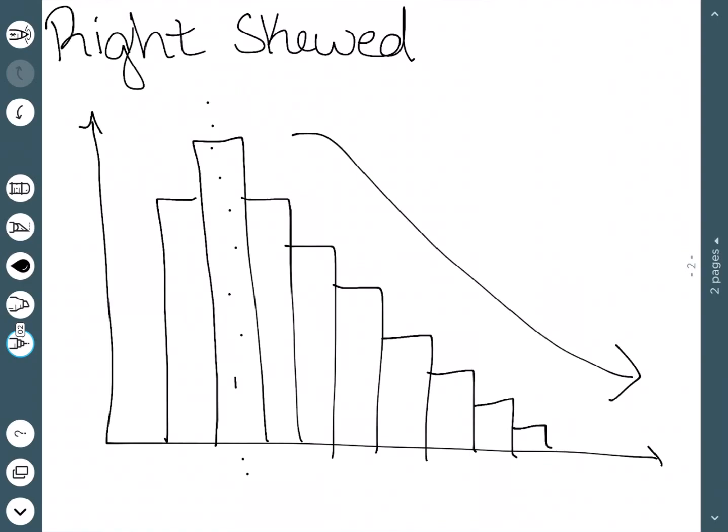So the right tells us where the tail of this distribution is. These distributions tend to have a lot of low values and then very few high values.